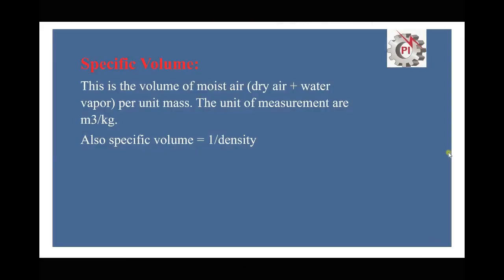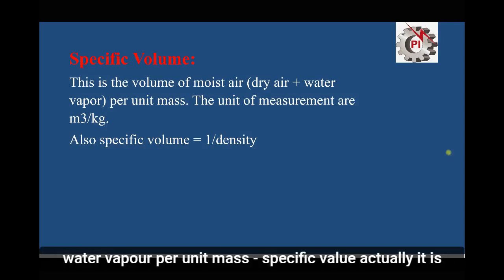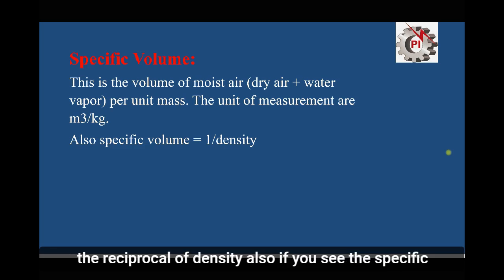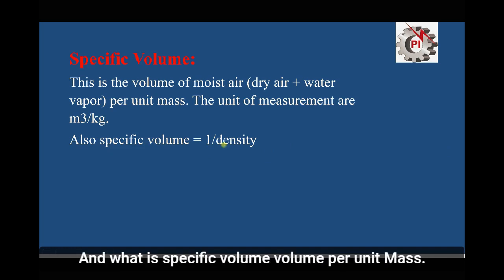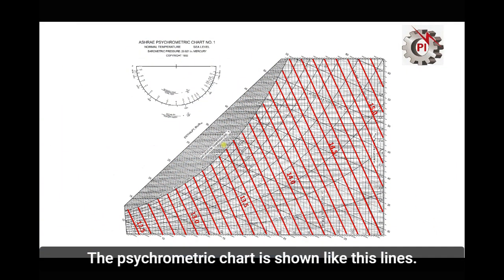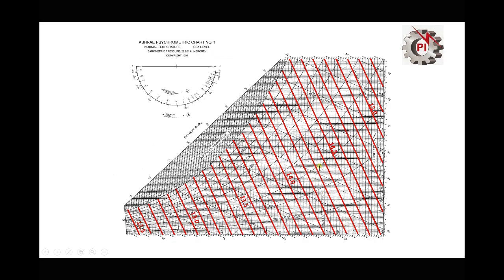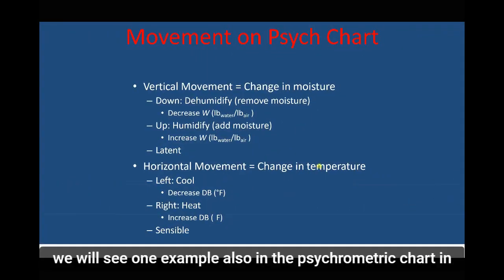Specific volume is the volume of moist air — dry air plus water vapor — per unit mass. It is the reciprocal of density: density is mass per unit volume, while specific volume is volume per unit mass. In the psychrometric chart, specific volume is shown as diagonal lines.